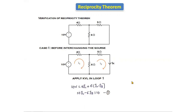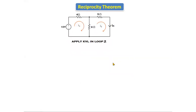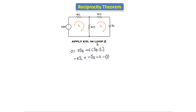That is equation number one. Now applying KVL in loop two — there is no source in loop two, so the source voltage is zero. For the 5-ohm resistor, only I2 flows, giving 5·I2. The 6-ohm resistor is common to both loops with currents in opposite directions, so we get 6·(I2 minus I1). Simplifying: minus 6·I1 plus 11·I2 equals 0. This is equation number two.